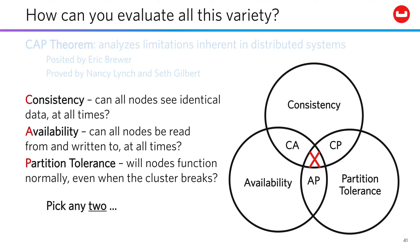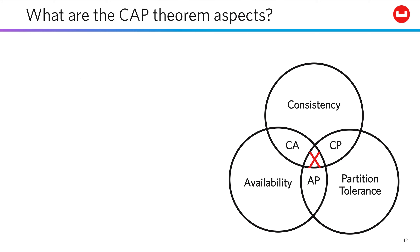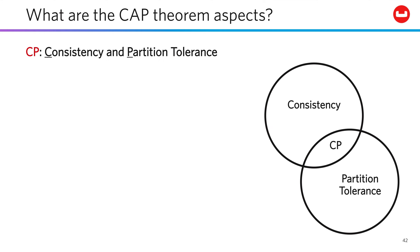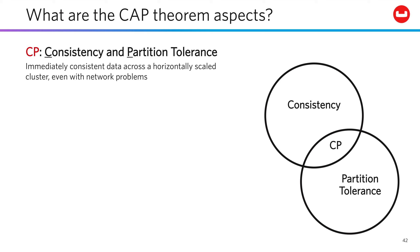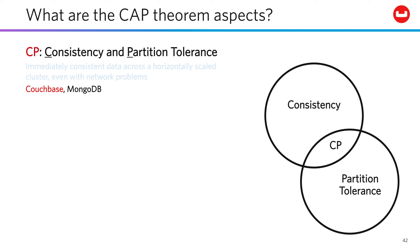It's an iron triangle — you get to pick any two you'd like. So let's take a look at this by the twos. If you choose a CP software design, meaning you're emphasizing consistency and partition tolerance, then you can immediately get consistent data from any node in the cluster that's able to respond, even if there are network problems between it and other nodes. Couchbase and MongoDB fall into this aspect.